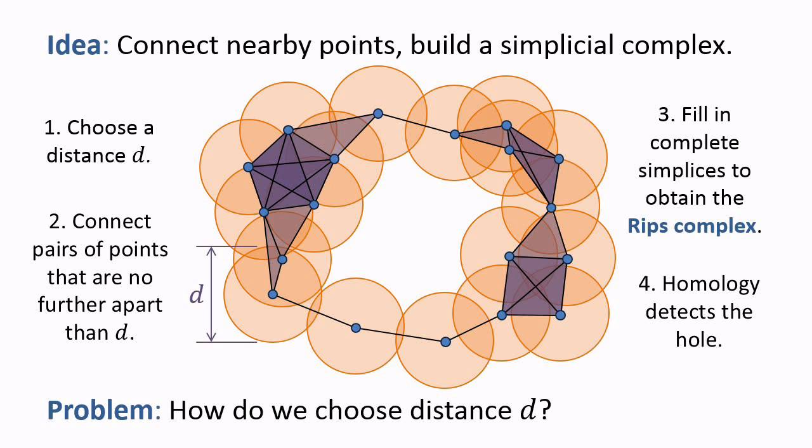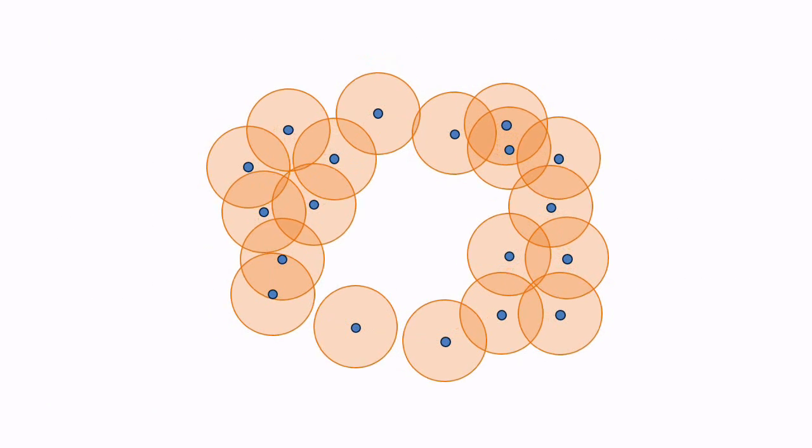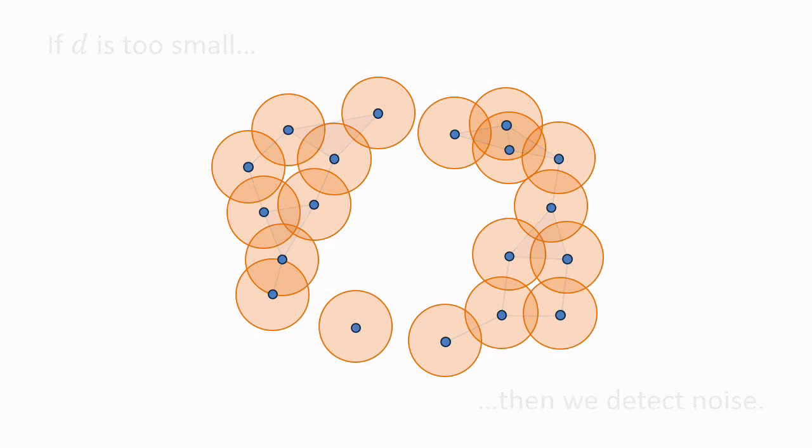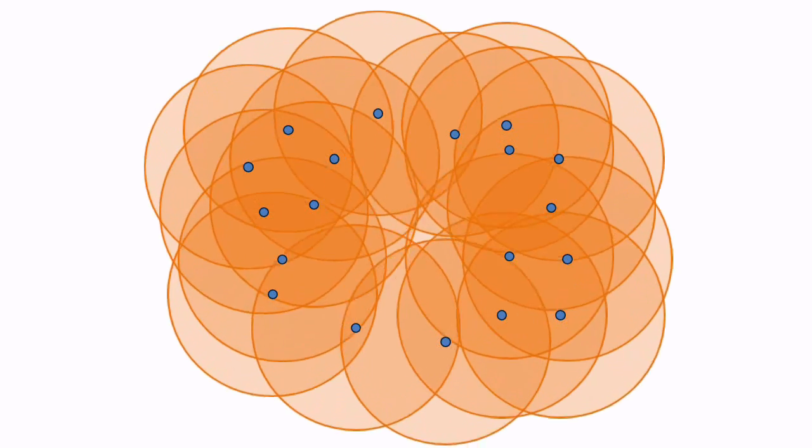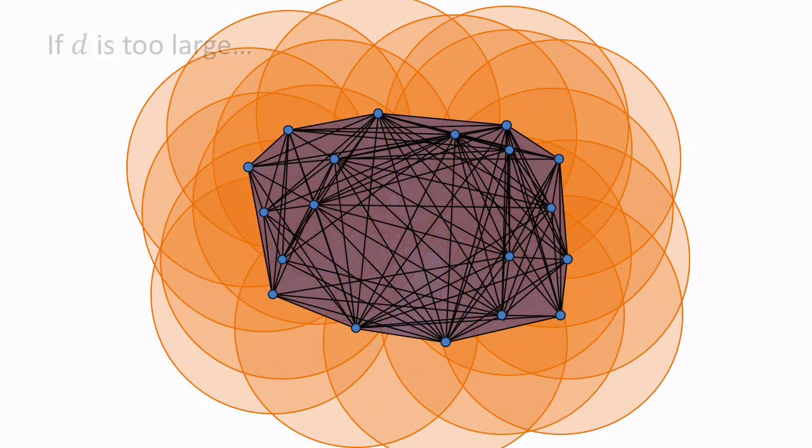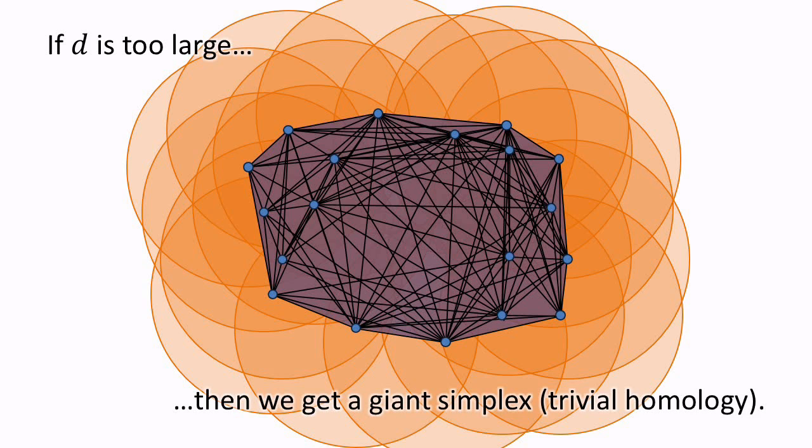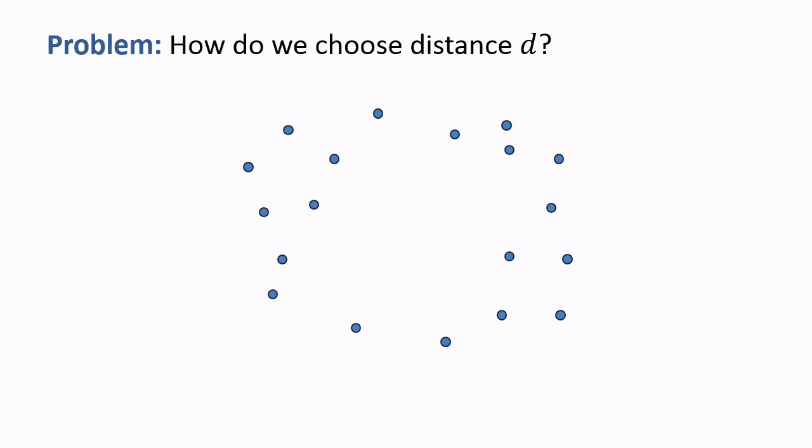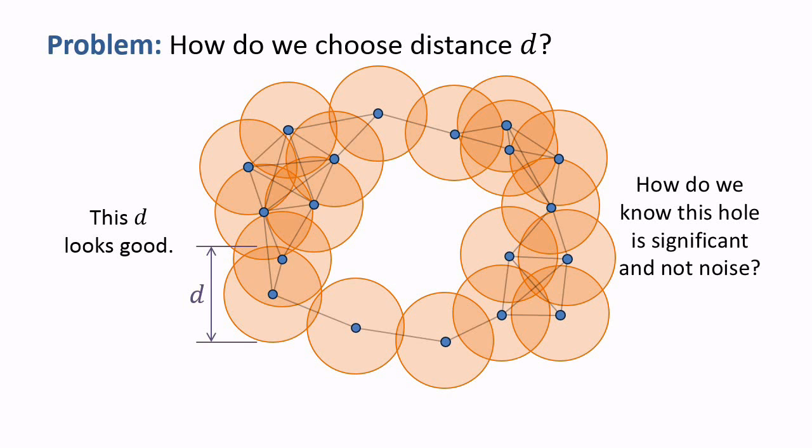There is still a problem, however. How do we choose the distance d? If d is too small, we might see multiple connecting components, and small holes that are artifacts of the sampling. In short, we detect noise. On the other hand, if d is too large, then any two points get connected, and we get a giant simplex, which has trivial homology. We don't know what distance to choose without some special insight. This choice of d reveals a single hole, but how do we know it is significant and not noise?